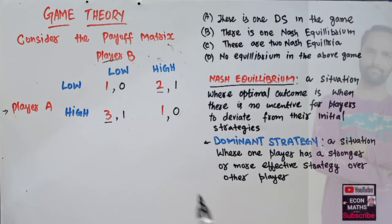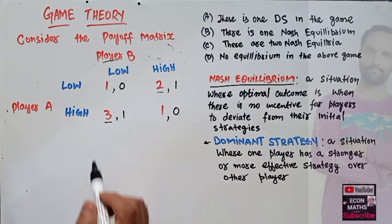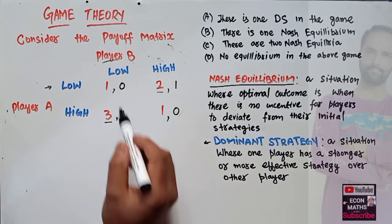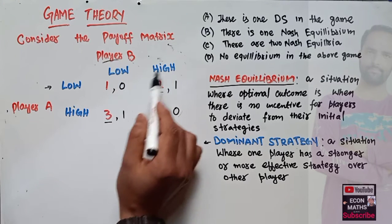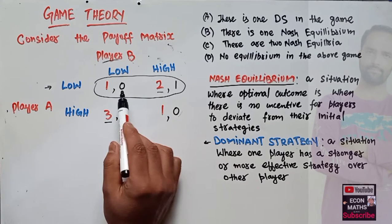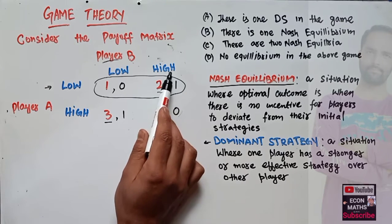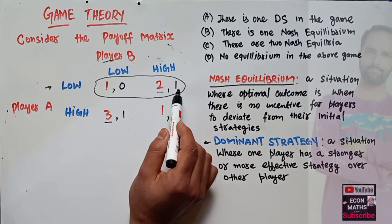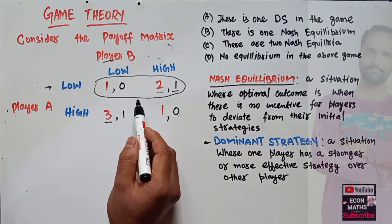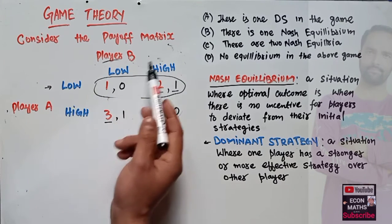Now let us check whether Player B has a dominant strategy. When Player A chooses low, Player B has two options: to play low or high. Playing low gives Player B zero payoff, while playing high gives one payoff, so Player B will choose high. When Player A chooses low, Player B chooses high.